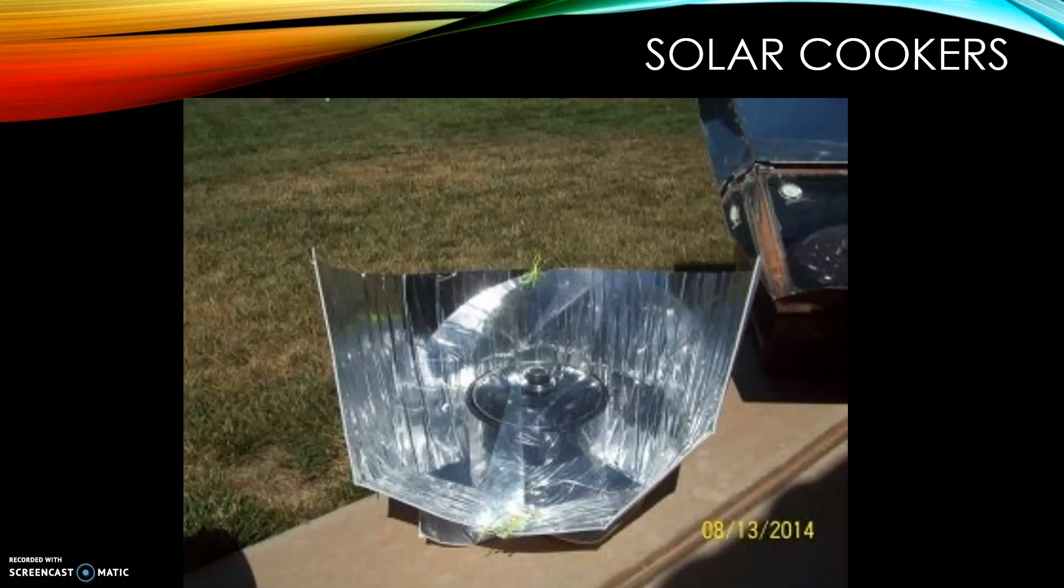Another example is solar cookers and they work by the same principles as a radio telescope, but they're collecting specifically the sunlight and reflecting it to that focal point where the food is and gets heated up.